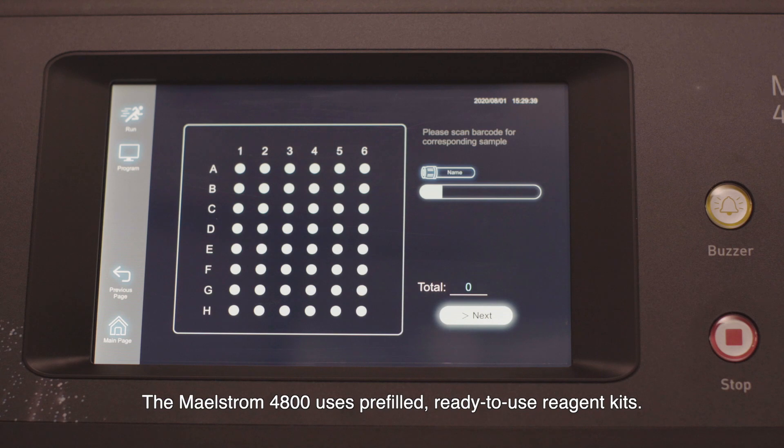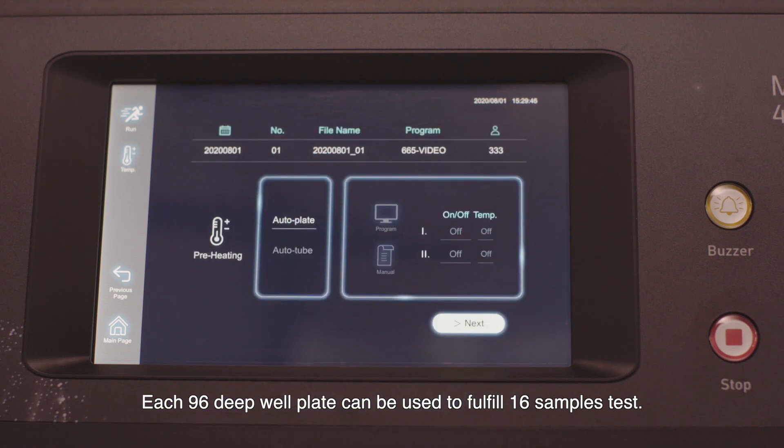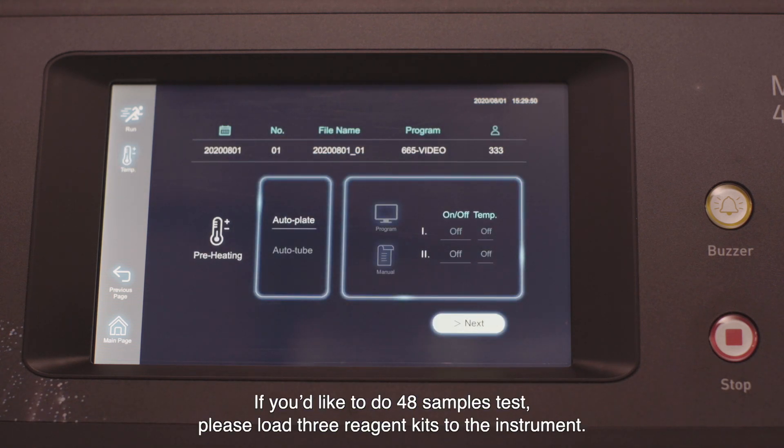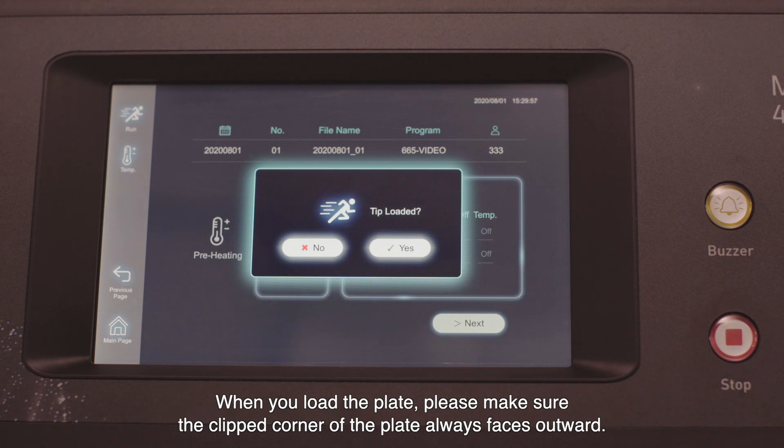The Maelstrom 4800 uses pre-filled ready-to-use reagent kits. Each 96 deep well plate can be used to fulfill 16 samples test. If you'd like to do 48 samples test, please load three reagent kits to the instrument. When you load the plate, please make sure the clipped corner of the plate always faces outward.